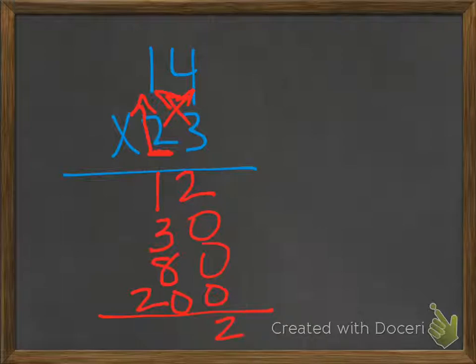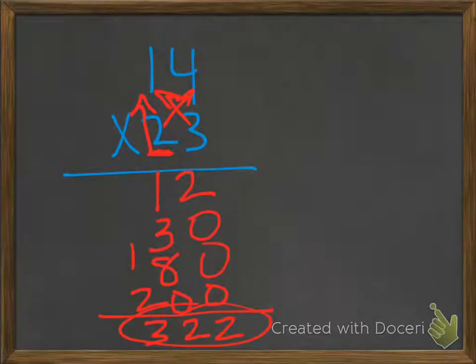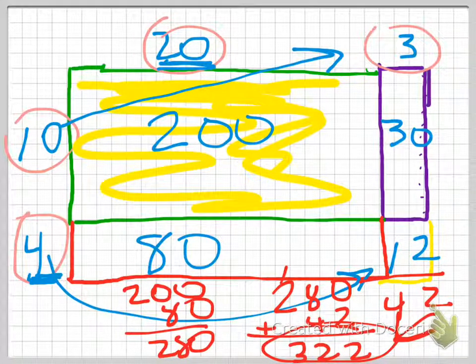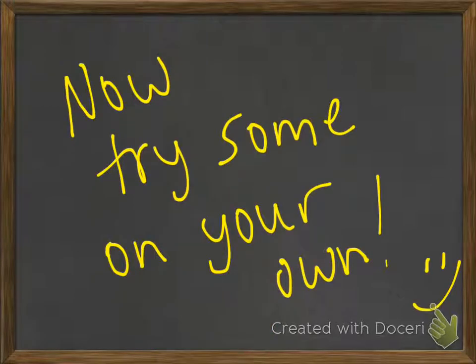2. You get 4. Here's 12. And look at that. We get the same answer as the other page. We have 322 here and 322 there. Either way works. Whatever way works best for you. This is using an array, and this is using the expanded algorithm. All right.